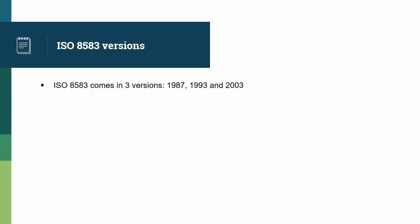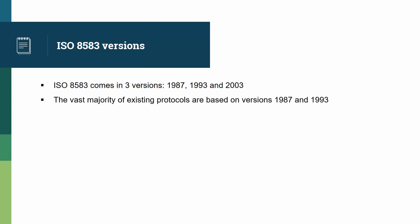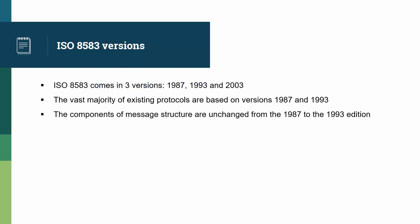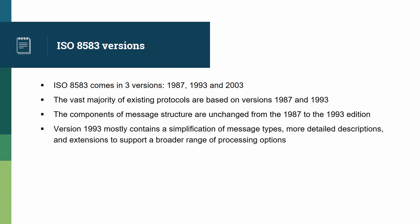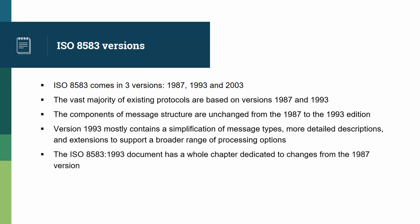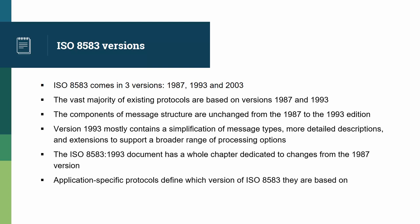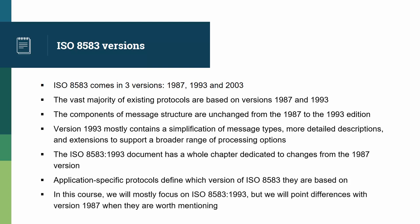As we explained in the first chapter, there are several versions of ISO 8583. It comes in three versions: 1987, 1993, and 2003. The vast majority of existing protocols are based on versions 1987 and 1993. The components of message structure are unchanged from the 1987 to the 1993 edition. Version 1993 mostly contains a simplification of message types, more detailed descriptions, and extensions to support a broader range of processing options. The ISO 8583-1993 document has a whole chapter dedicated to changes from the 1987 version. Application-specific protocols define which version of ISO 8583 they are based on. In this course, we will mostly focus on ISO 8583 version 1993, but we will point at differences with version 1987 when they are worth mentioning.